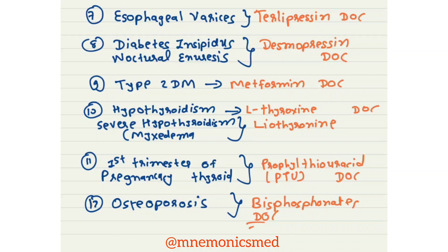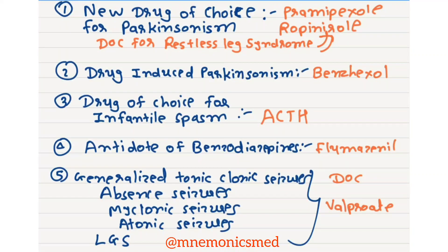Now we will learn about the new drug of choice for Parkinsonism. It is Pramipexole or Ropinirole.